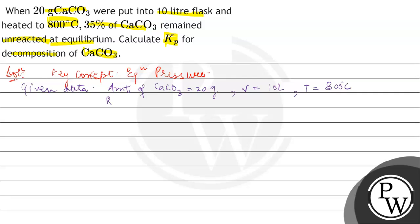Also the reacted percentage of calcium carbonate: because 35% remained unreacted, so 100 minus 35 equals 65% CaCO3 reacted.